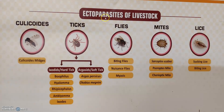The main ectoparasites of livestock include: Culicoides midges, which are very important in transmission of African horse sickness and blue tongue disease. Hard ticks include Boophilus, Hyalomma, Rhipicephalus, Amblyomma, Ixodes, and Haemaphysalis. Soft ticks, or argasids, include Argas persicus, Otobius, and Ornithodoros megnini.